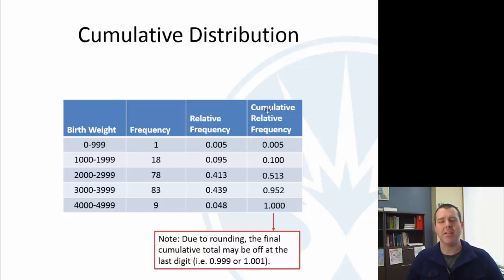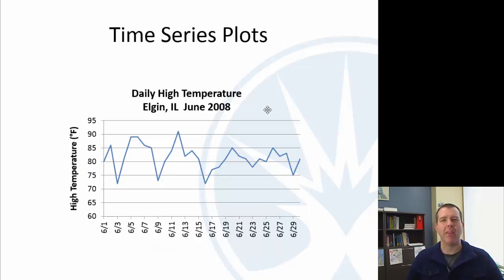I just have an example of a time series plot. We're not going to be making these in the course. There are a couple of homework questions about them and you might be asked something on a test, maybe to identify one. But these should be very familiar to you where time is along the horizontal axis and then the value is on the vertical axis. In this case just some data I had from Elgin, Illinois.